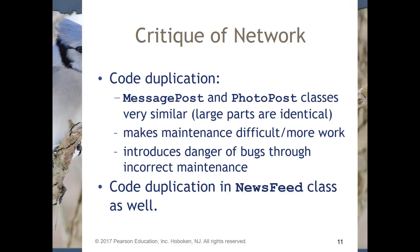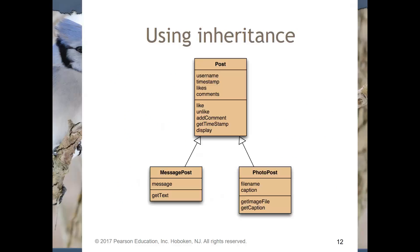A critique of the network implementation: there's lots of code duplication — message posts and photo posts are almost identical — which makes maintenance difficult. If I need to make a change, I have to go in one place and then the other, which risks mistakes and bugs. There's also code duplication in the newsfeed class itself, because I now have to have two loops instead of potentially just one.